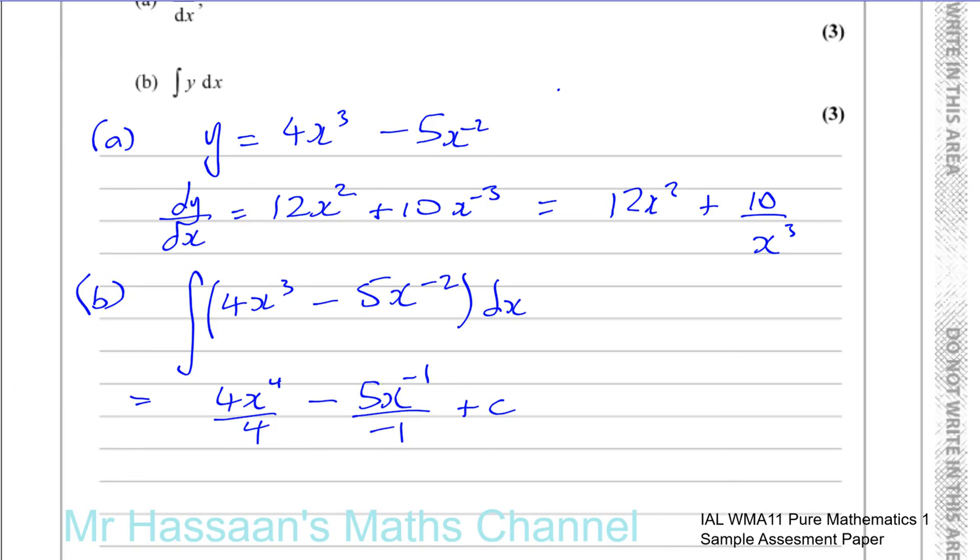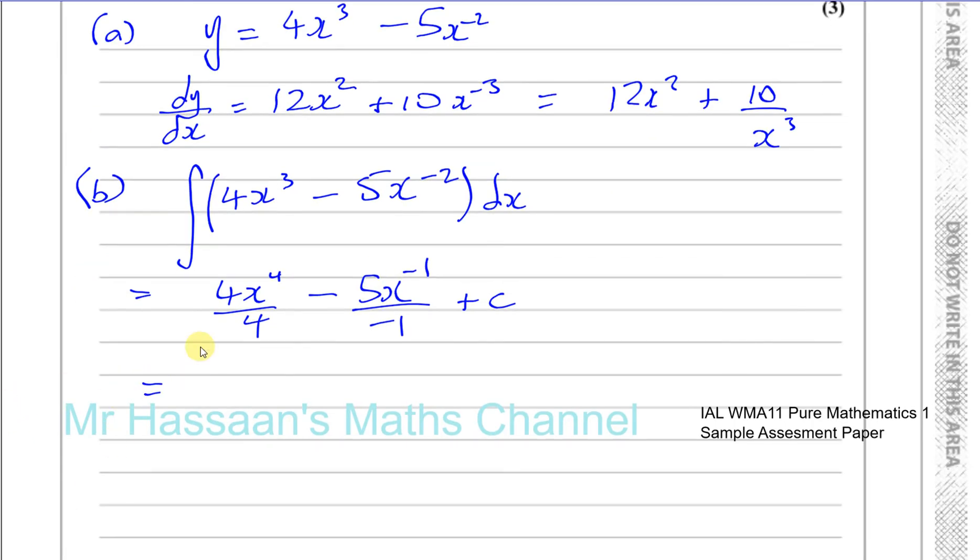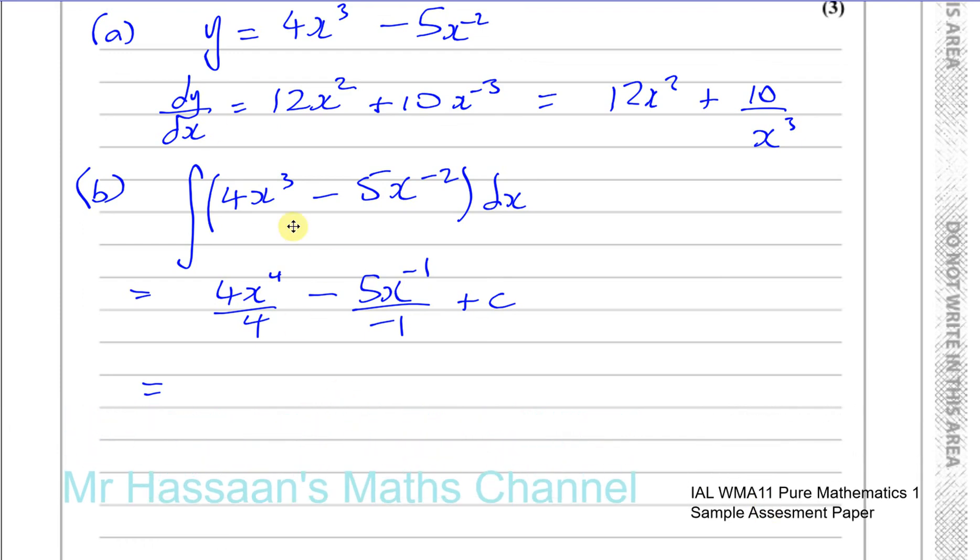And now we're just going to simplify this to make it a proper answer. So now 4x divided by 4 gives you x. So you've got x to the power of 4. Minus divided by minus is plus. And you've got 5x to the power of minus 1 plus c. Or if you want to, as I said, you could write this with the x in the denominator. So 5 over x plus c. Okay, and there we have an answer. Either of these two are perfectly acceptable answers.